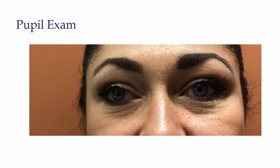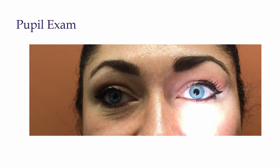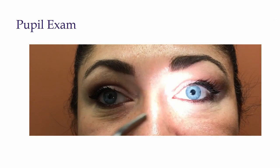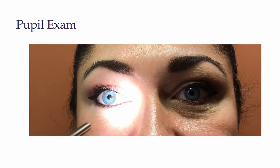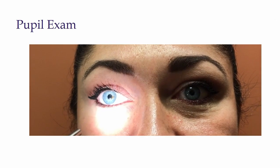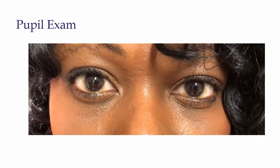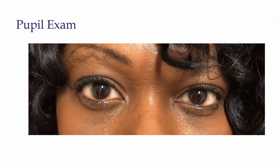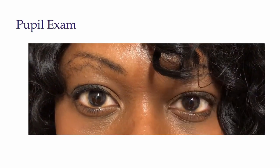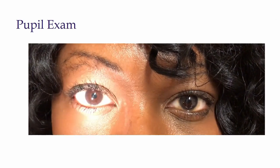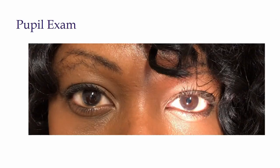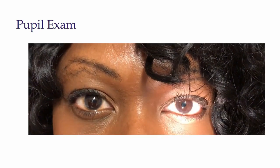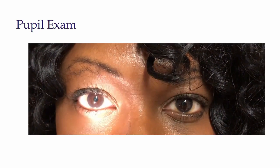We have examples of individuals with different iris colors. It is helpful to dim the lights, especially for patients with miotic pupils and dark iris colors. You can also ask the patient to tilt their chin up slightly to give you better visualization.